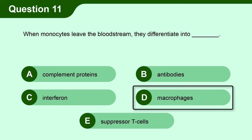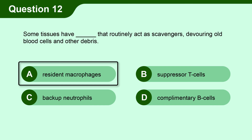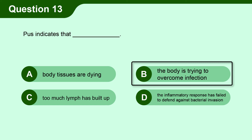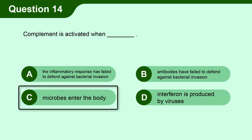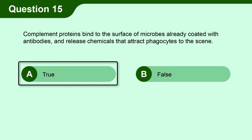Question 11. When monocytes leave the bloodstream, they differentiate into D. Macrophages. Question 12. Some tissues have A. Resident macrophages that routinely act as scavengers devouring old blood cells and other debris. Question 13. Pus indicates that B. The body is trying to overcome infection. Question 14. Complement is activated when C. Microbes enter the body. Question 15. Complement proteins bind to the surface of microbes already coated with antibodies and release chemicals that attract phagocytes to the scene. A. True.